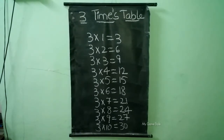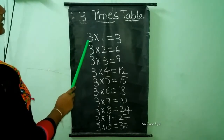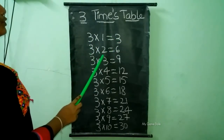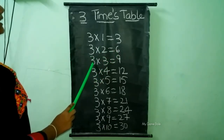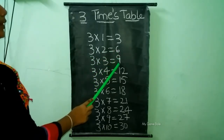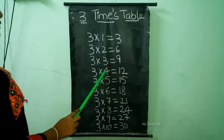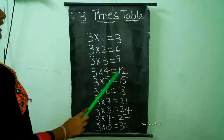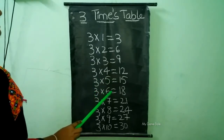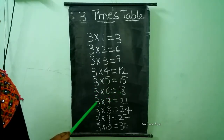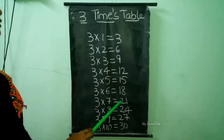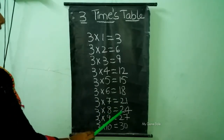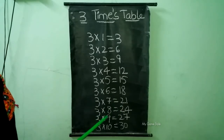3 times table. Let's start. 3 times 1 is equal to 3. 3 times 2 is equal to 6. 3 times 3 is equal to 9. 3 times 4 is equal to 12. 3 times 5 is equal to 15. 3 times 6 is equal to 18. 3 times 7 is equal to 21. 3 times 8 is equal to 24. 3 times 9 is equal to 27.